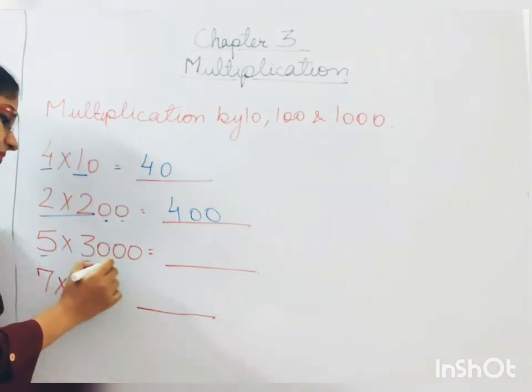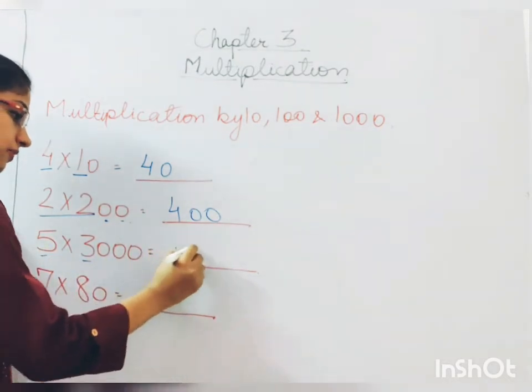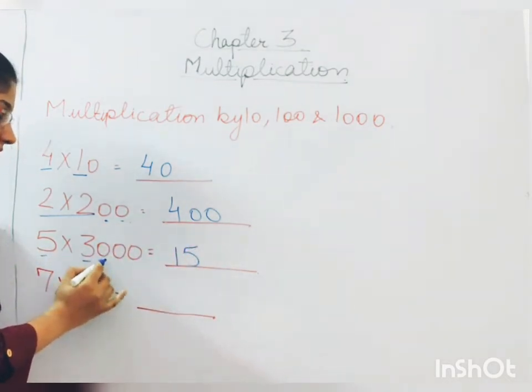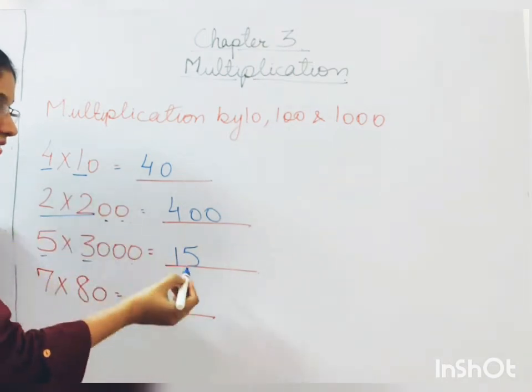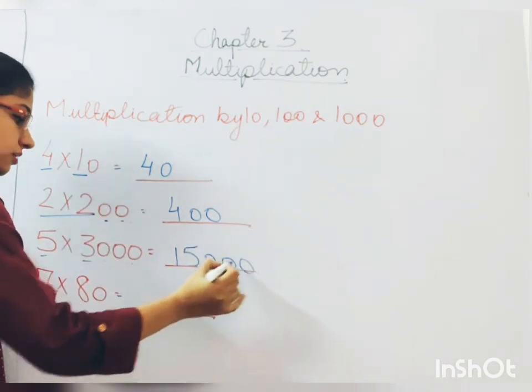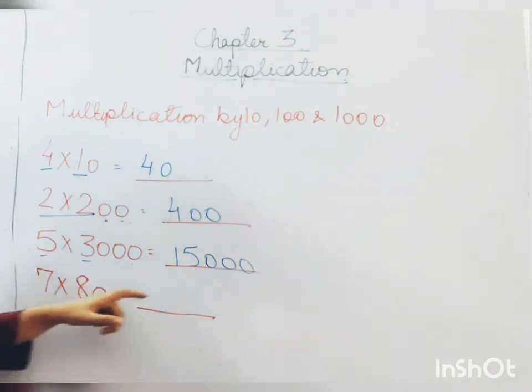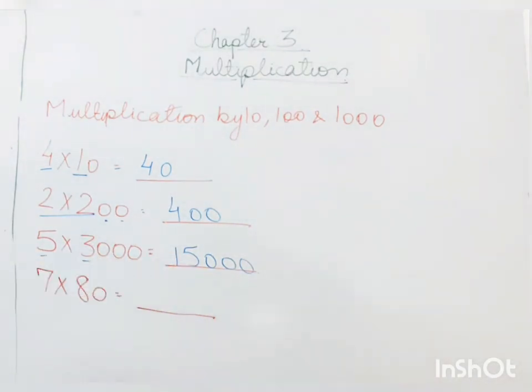Next, 5 multiplied by 3 will be 15. Count the number of 0s, 1, 2, 3 and add them at the back. 1, 2, 3. So 5 multiplied by 3 will be 15, 3000 will be 15,000.